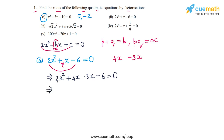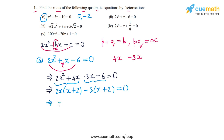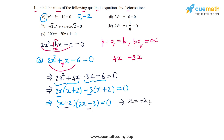Now we factorize. From the first pair of terms, we take out a common factor of 2x, leaving x + 2. From the second pair, we take out a common factor of -3, leaving x + 2 again. Taking out (x + 2), we get (x + 2)(2x - 3) = 0. The roots are x = -2 and x = 3/2. That solves part 2.